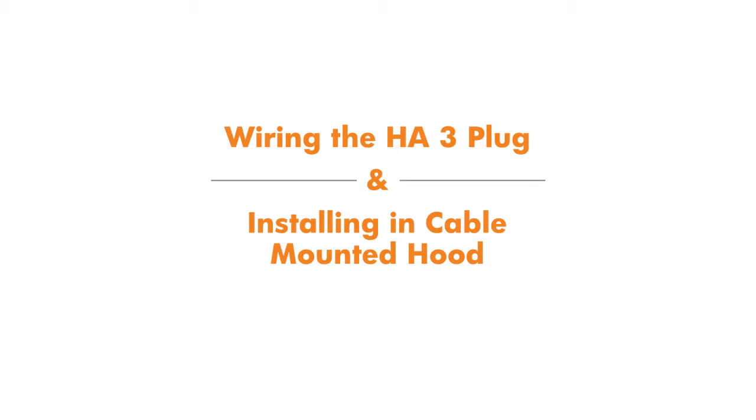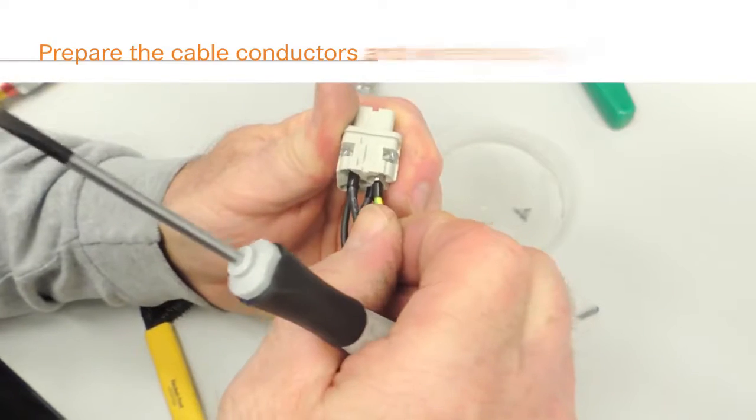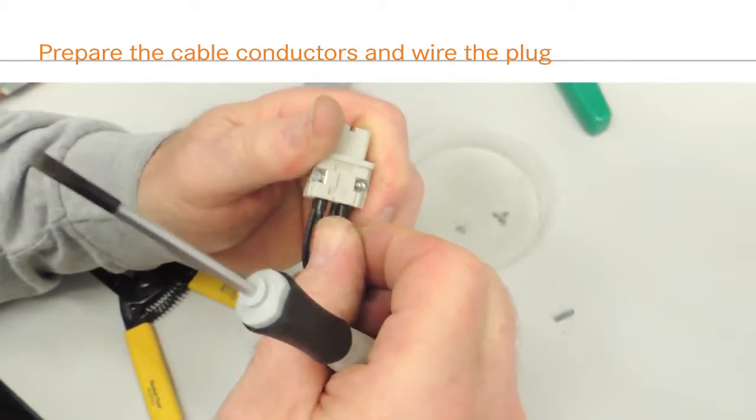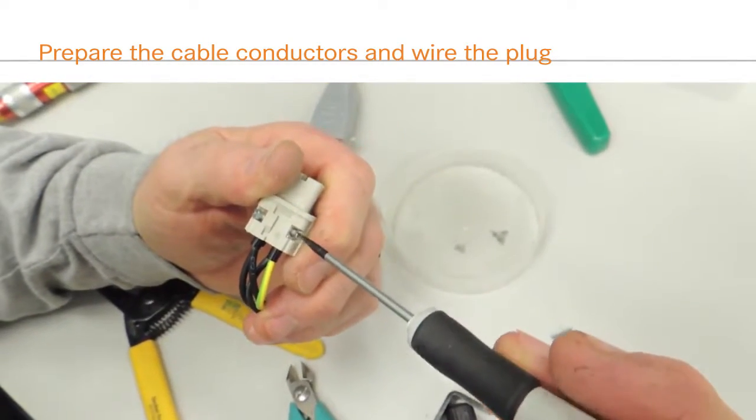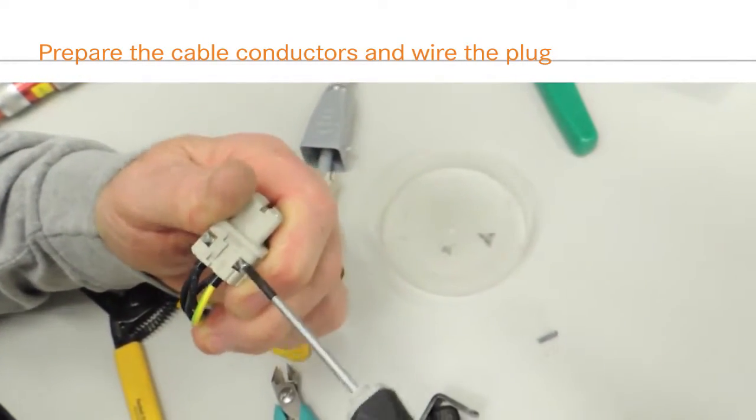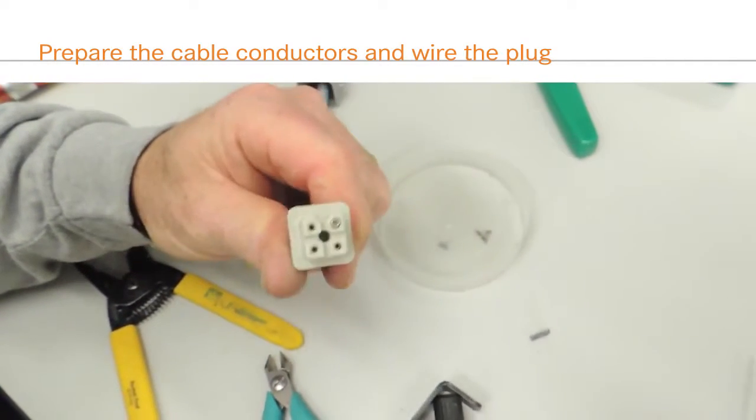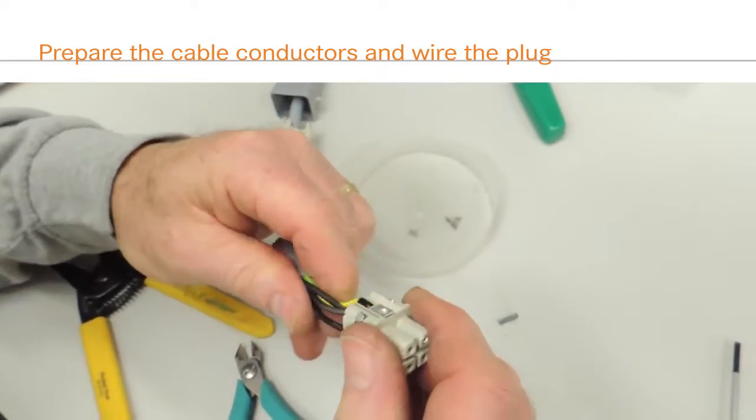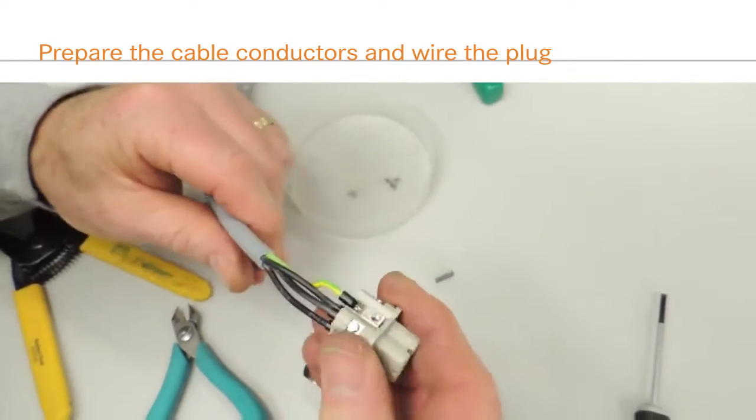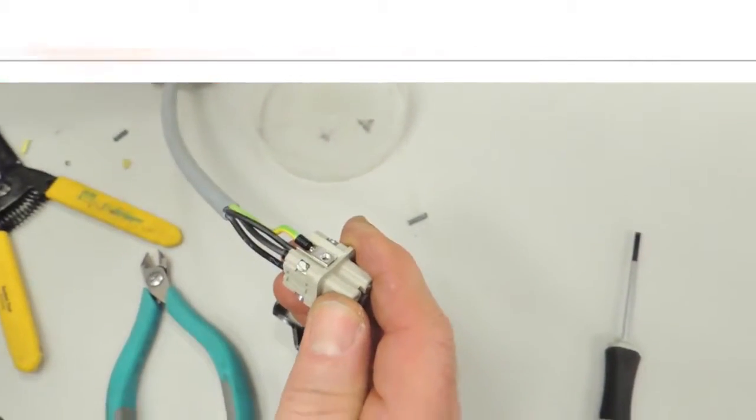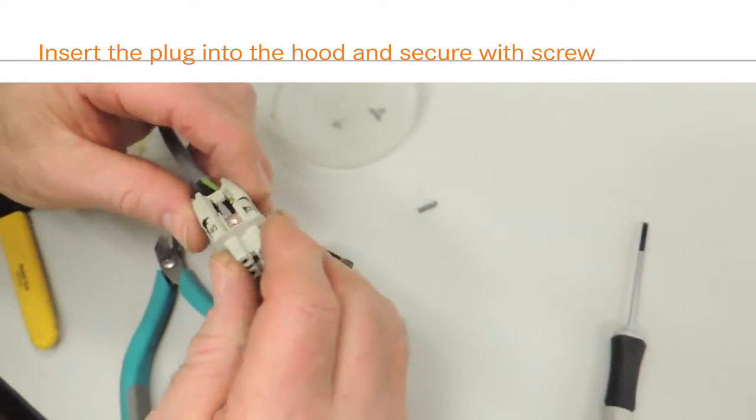Now we will wire the EPIC HA3 plug. Begin by sliding the EPIC HA3 hood on the cable. Next, prepare the cable as outlined previously. Strip the conductors, affix the wire ferrules, and insert the conductors into the HA insert. Once the insert is wired, slide the terminal cover over the terminal screws, install the insert into the hood, and secure with the screw.